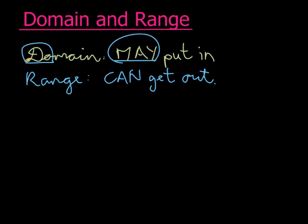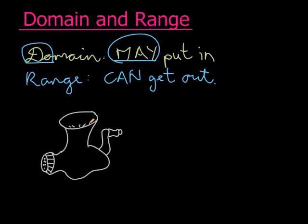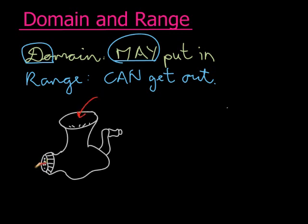Let me give you another type of example. Imagine we have a mincer — and I'm sorry to say, that's my best attempt at drawing a mincer. A mincer is that thing where you put pieces of meat inside and it minces them so that you get mince coming out. So there's an input and an output.